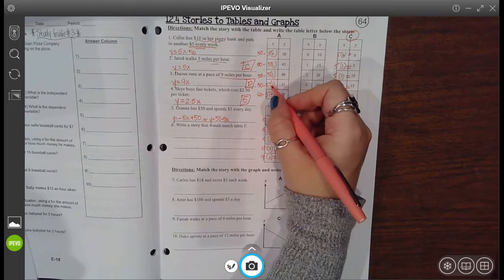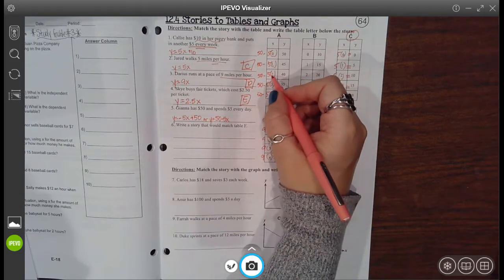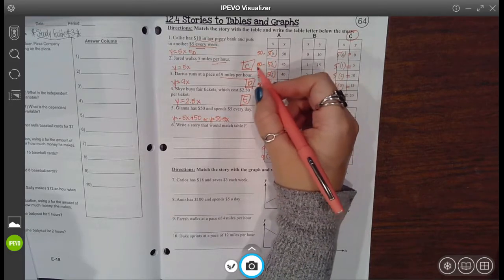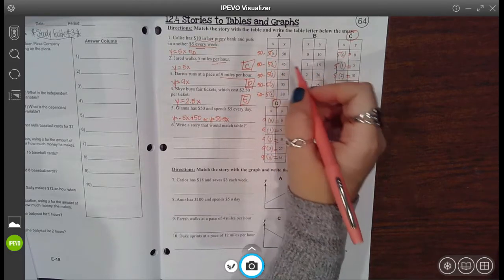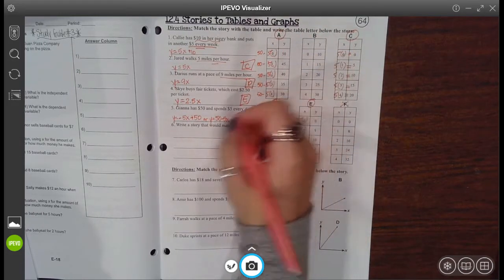5 times 3 is 15, 50 minus 15 is 35. 5 times 2 is 10, 50 minus 10 is 40. 5 times 1 is 5, and 50 minus 5 is 45. There we go. So A matches this one.